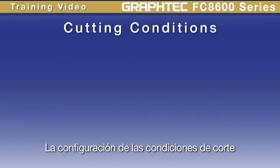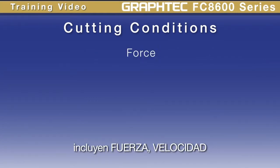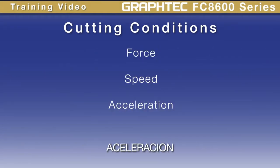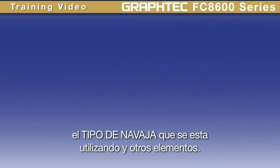The settings within a cutting condition include the force, speed, acceleration, the type of blade that's to be used, and other settings.